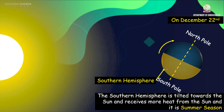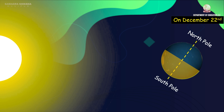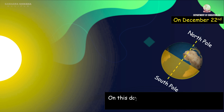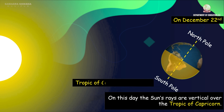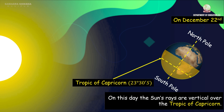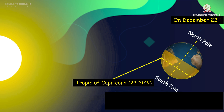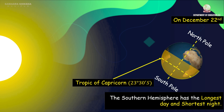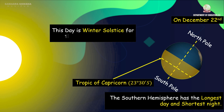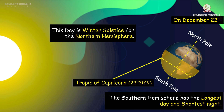On December 22nd, the sun's rays are vertical over the Tropic of Capricorn, which is at 23 degrees 30 minutes south of the equator. The southern hemisphere has the longest day and the shortest night. This day is winter solstice for the northern hemisphere.